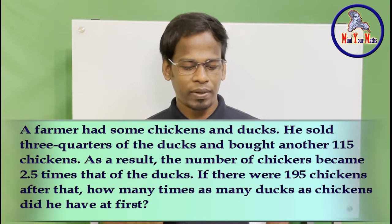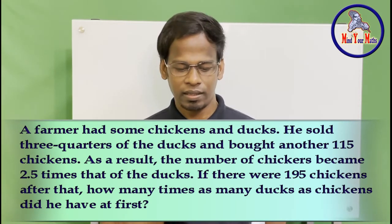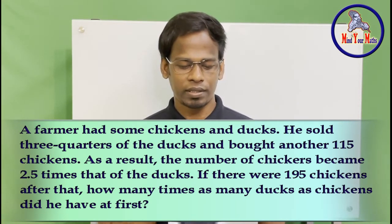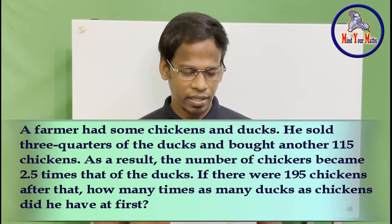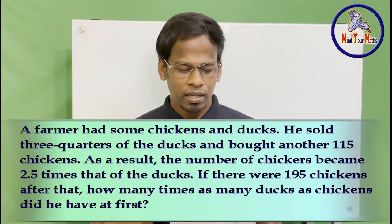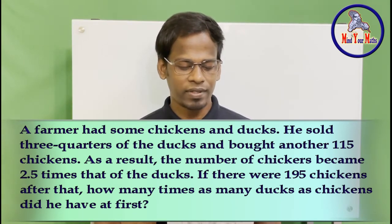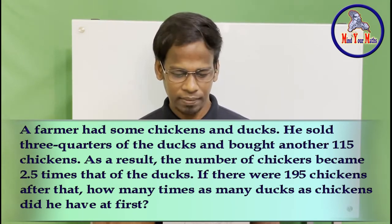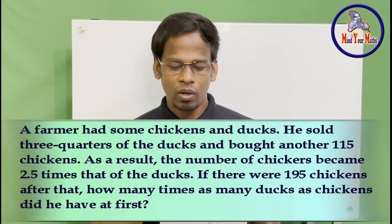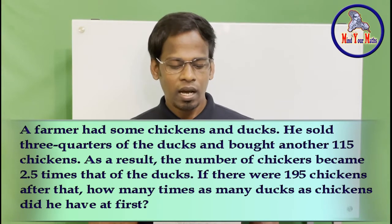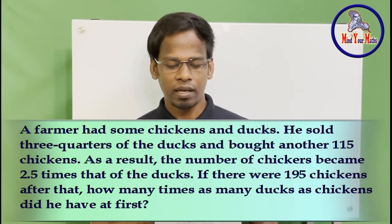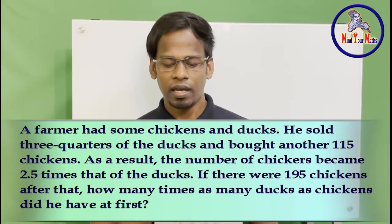Hey guys, let's see what we are going to solve in this video. I'll just read the problem for you. A farmer had some chickens and ducks. He sold three quarters of the ducks and bought another 115 chickens. As a result, the number of chickens became 2.5 times that of the ducks. If there were 195 chickens after that, how many times as many ducks as chickens did he have at first?